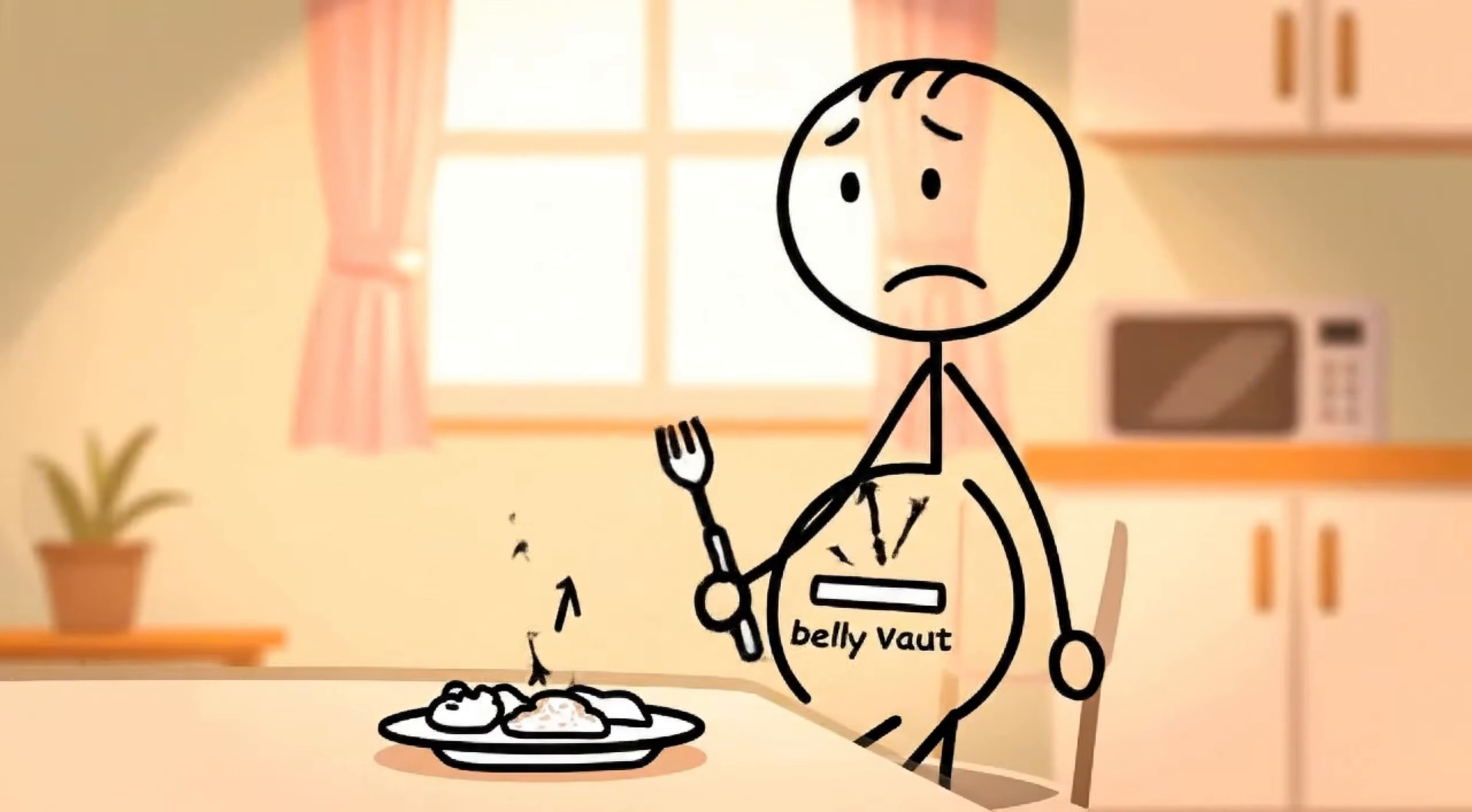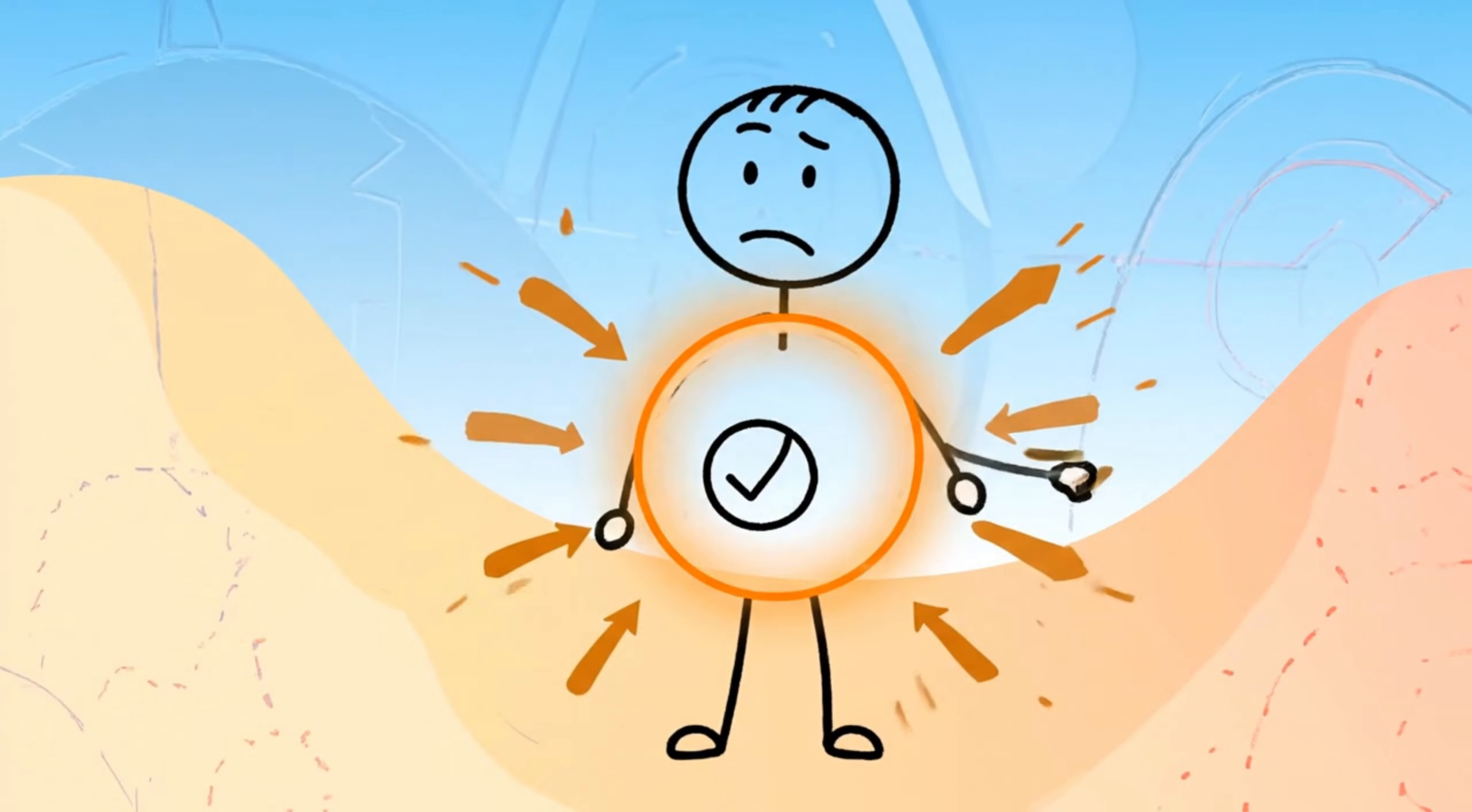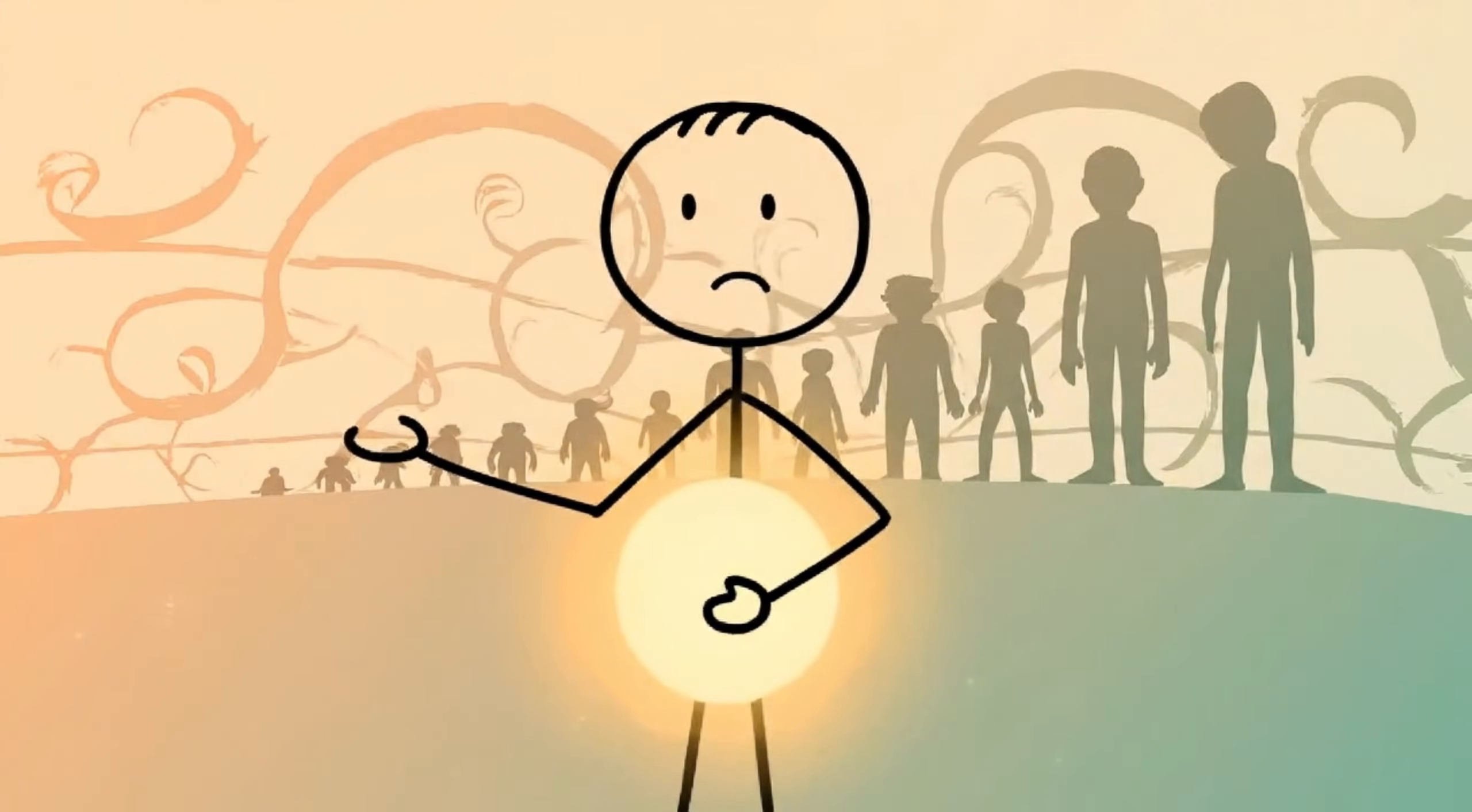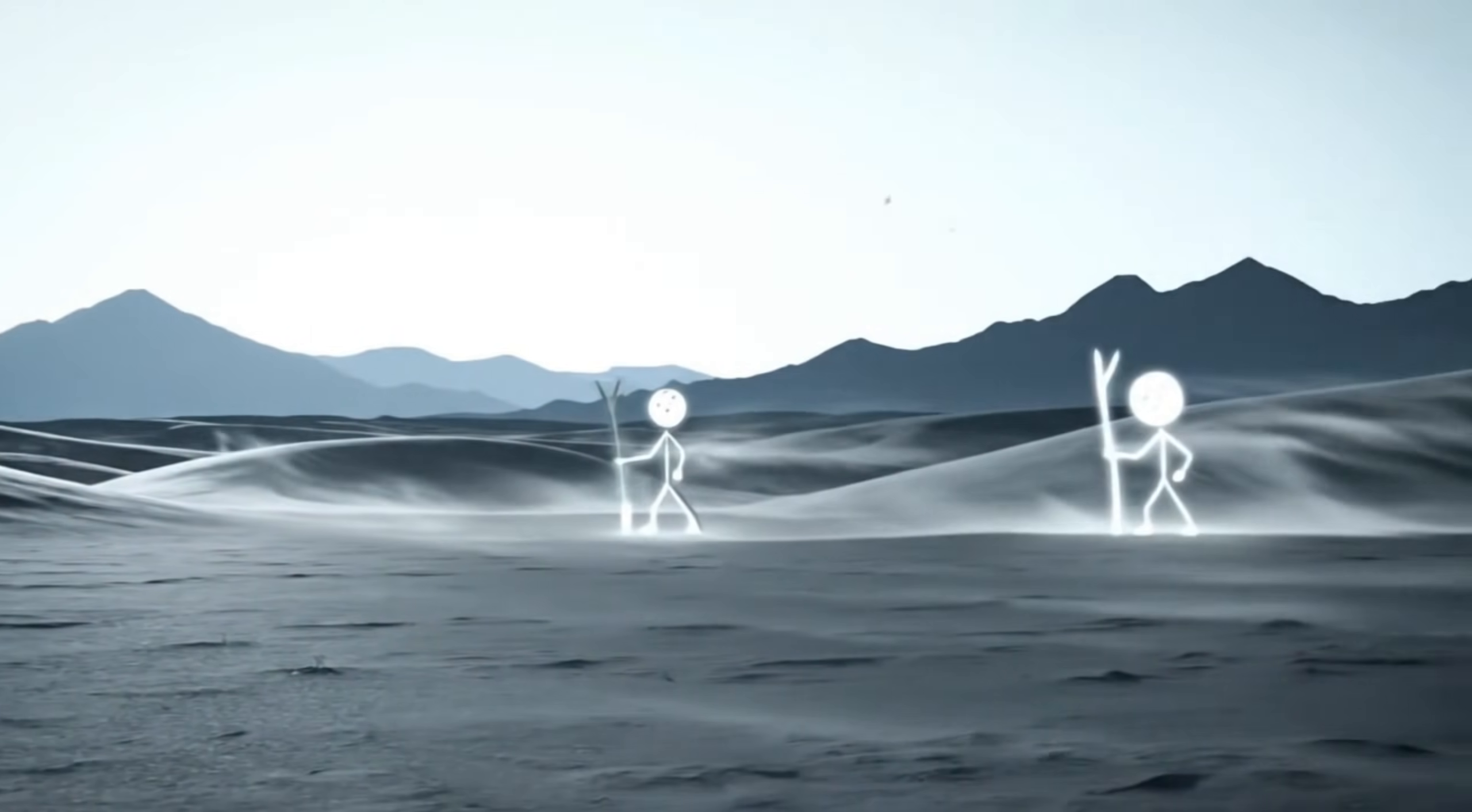By the time Helen crossed the 12-hour mark, her body had entered a threshold it rarely experiences in modern life. The last traces of her previous meal were fading from her bloodstream, and with them went the familiar rush of glucose that usually dictates her energy. Yet instead of slipping into chaos, her immune system shifted into something wiser: preservation mode.